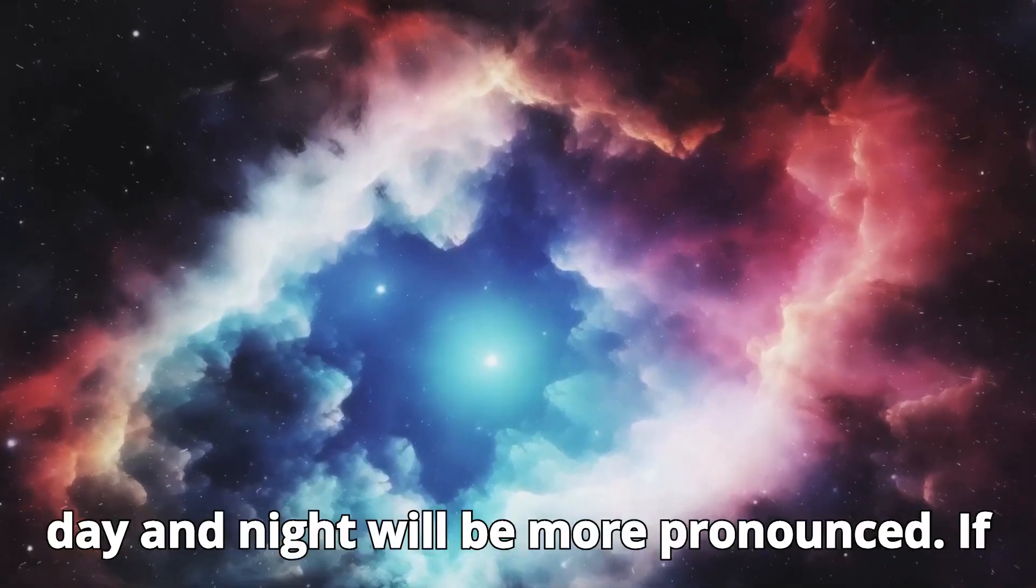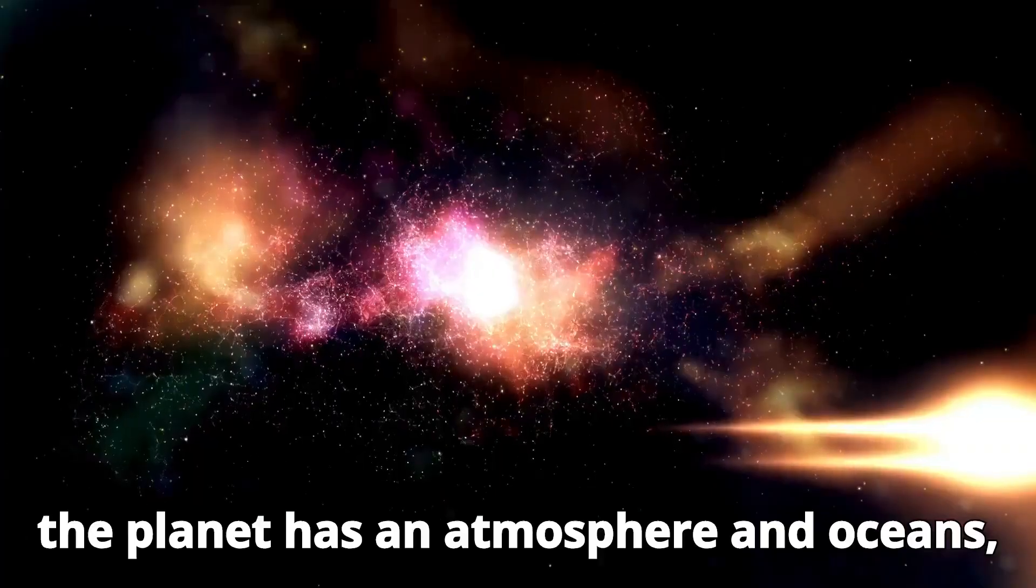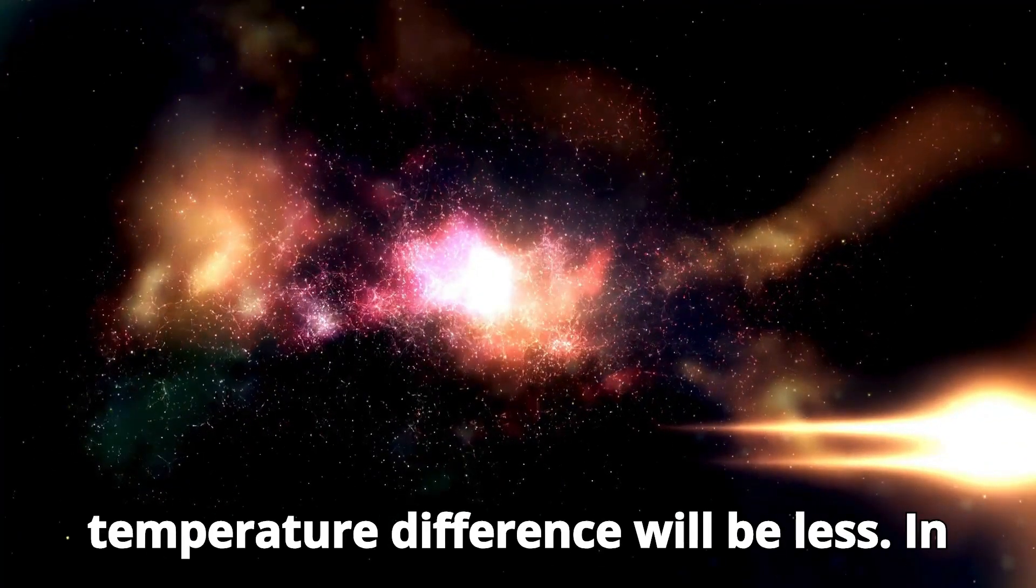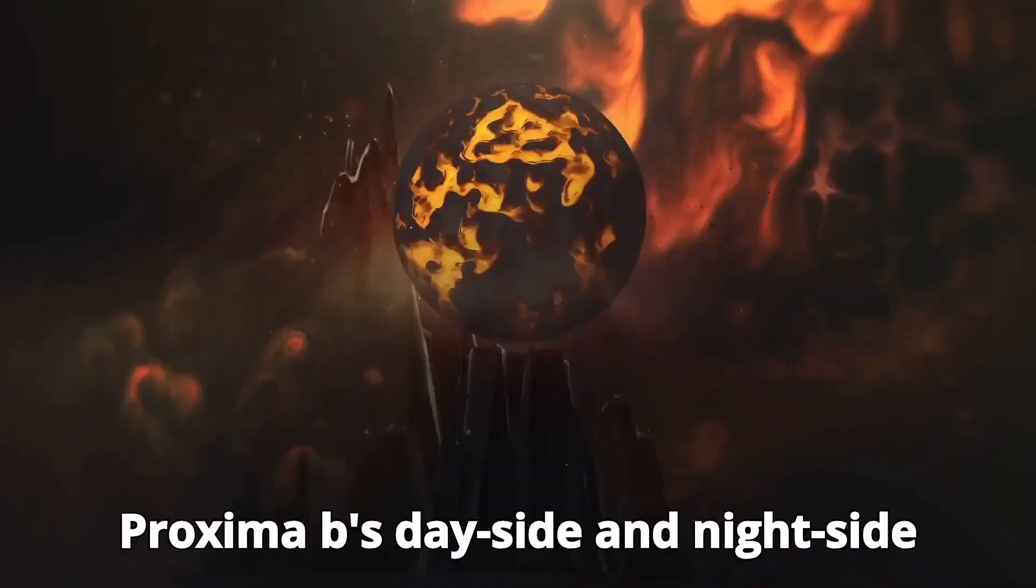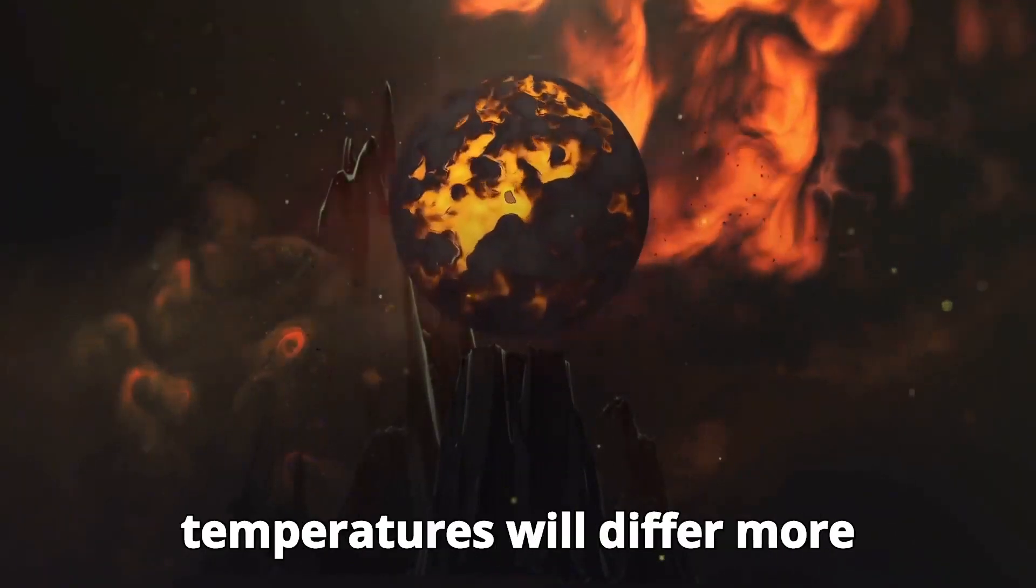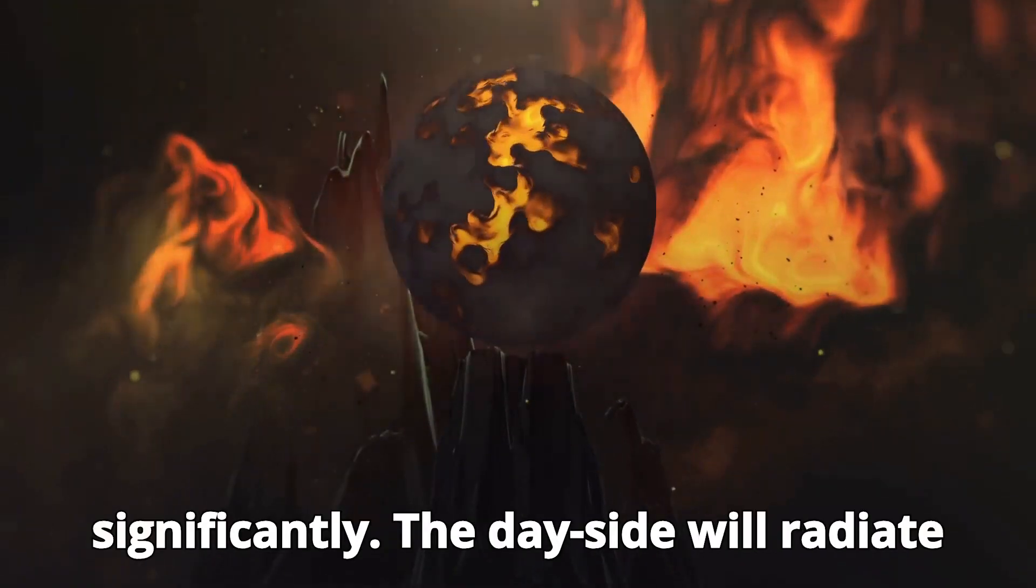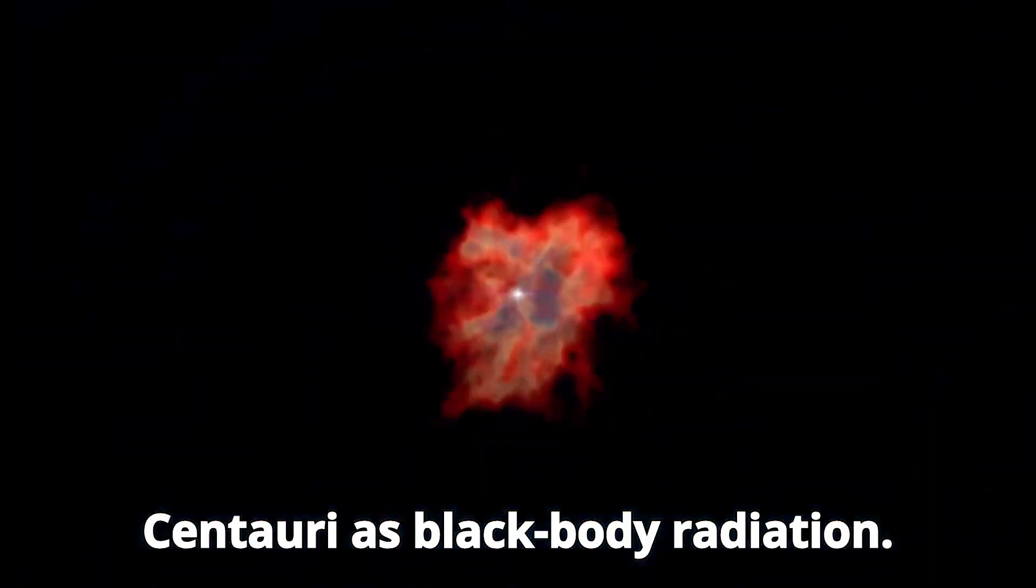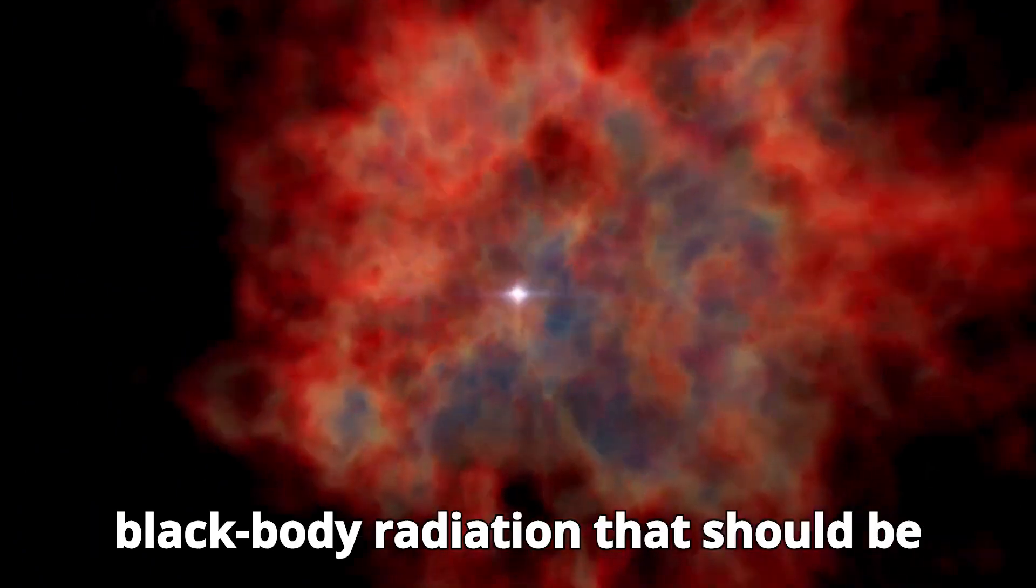If the planet has an atmosphere and oceans, both of which conduct heat, the temperature difference will be less. In the event that there isn't an atmosphere, Proxima b's day side and night side temperatures will differ more significantly. The day side will radiate all the energy it receives from Proxima Centauri as black body radiation. We can estimate the precise amount of black body radiation that should be present on the night side.